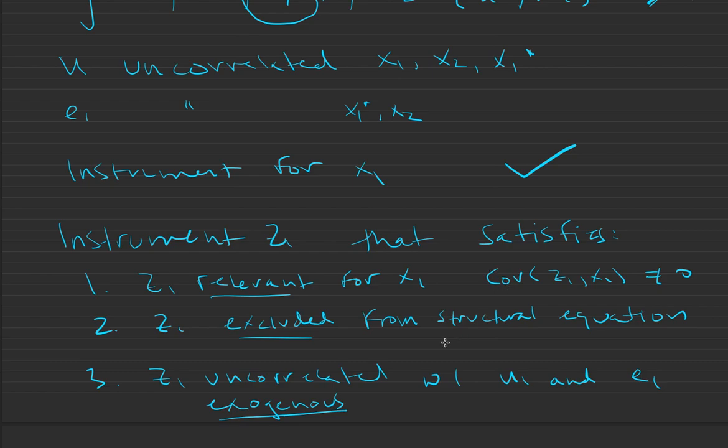So if we can find an instrument that satisfies these assumptions, then we can instrument for the endogenous, mismeasured variable x1.